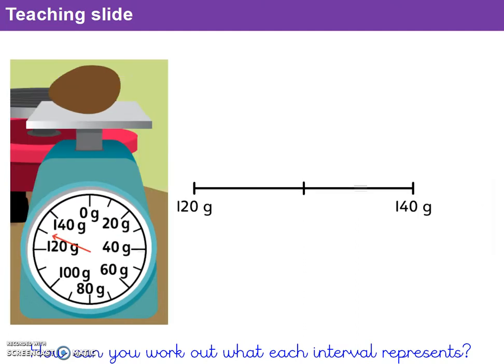Moving on to the second scale, I'll follow the same strategy. I find the difference between two marked amounts: 120g and 140g. I count the number of intervals: 1, 2 — so two jumps from 120 to 140. I divide the difference of 20 by 2, giving an answer of 10. So each interval is worth 10g. Checking by counting in 10s: 120g, 130g, 140g — that works! Each of those intervals is worth 10g.